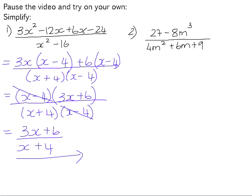In number 2, the numerator is the difference of two perfect cubes. So it will factorize into a binomial multiplied by a trinomial. The cube root of 27 is 3. The cube root of 8m cubed is 2m. The signs, remember, are same, opposite, and always positive.